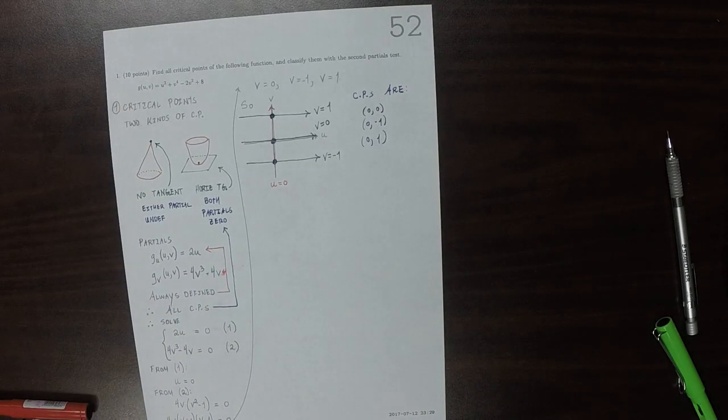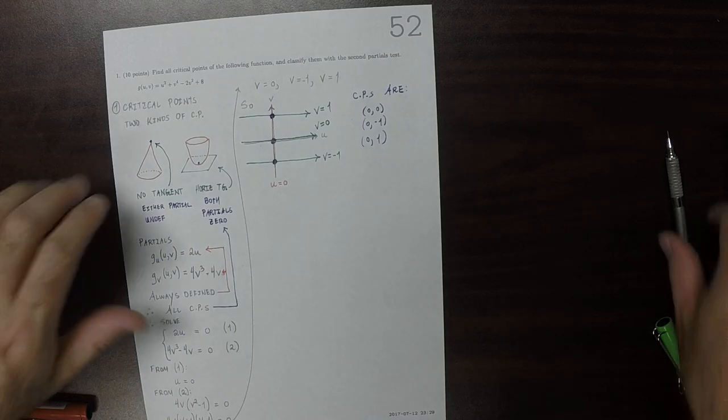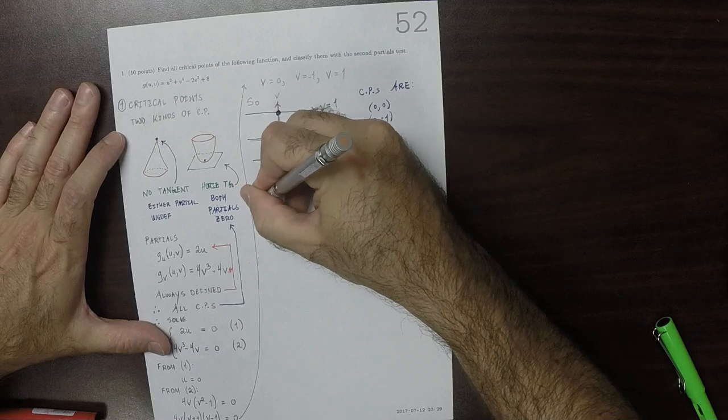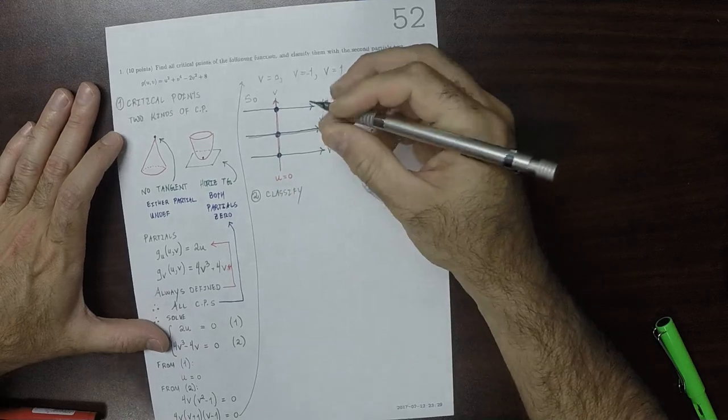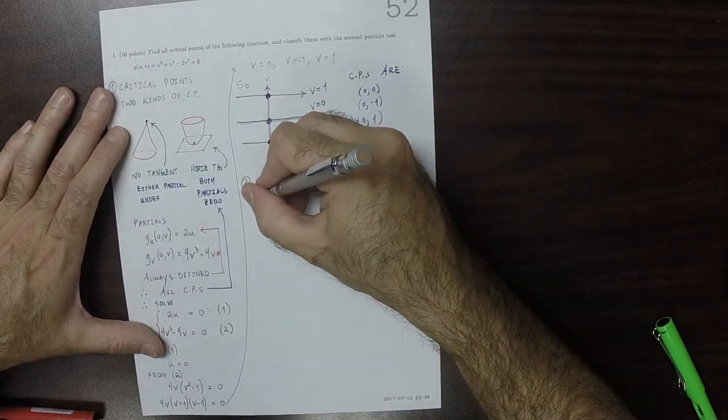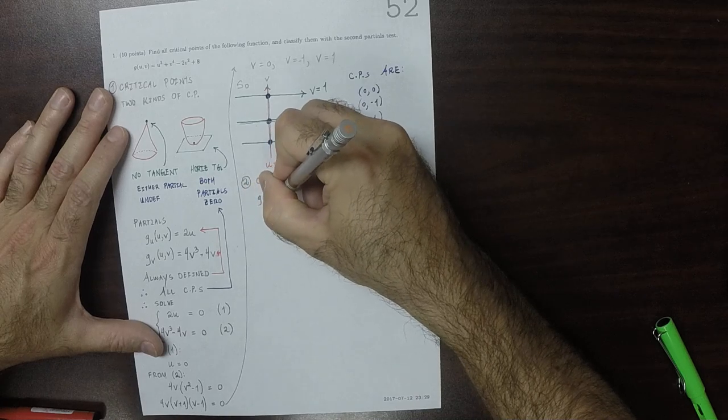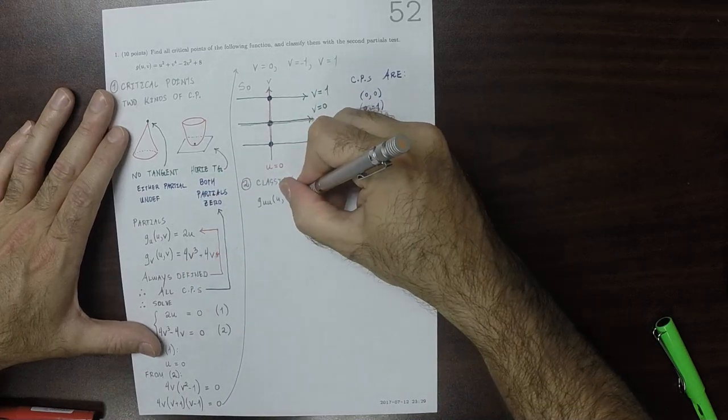So then we want to classify each of these. We'll need the second partials. So then the U, U partial. The U, U partial is two.